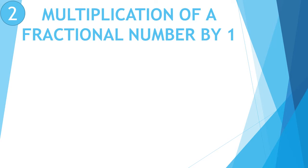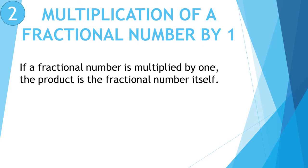Property number 2: Multiplication of Fractional Numbers by 1. If a fractional number is multiplied by 1, the product is the fractional number itself. For example, 3 upon 5 multiply 1. When we multiply a fraction by a whole number, the numerator of the fraction is multiplied by the whole number and the denominator does not change. So we write 3 multiply 1 upon 5. 3 1s are 3, so the fraction is 3 upon 5. If a fractional number is multiplied by 1, the product is the fractional number itself.